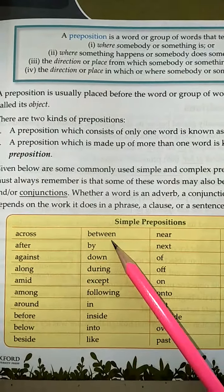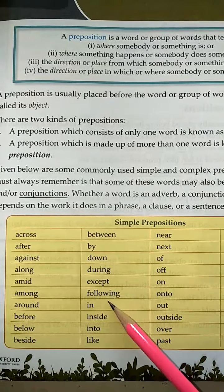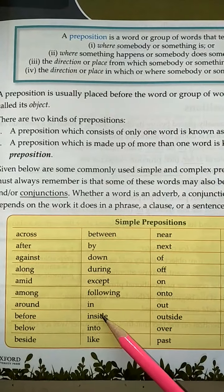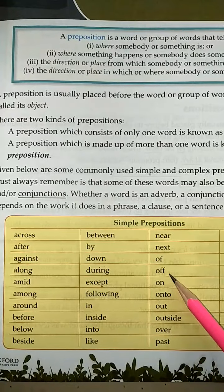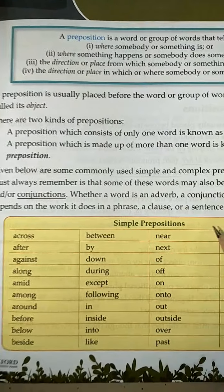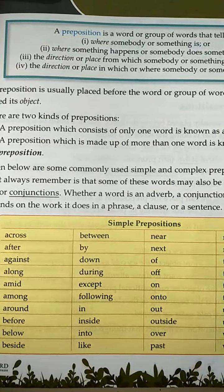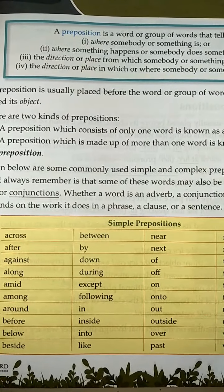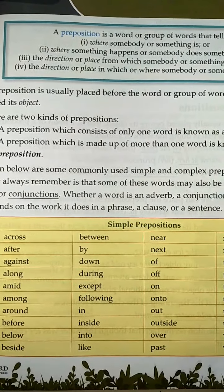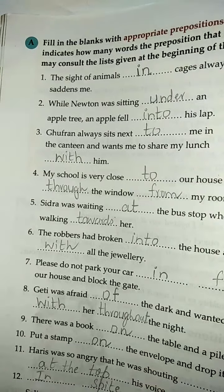In the same page, you can see the simple prepositions. It's a list: across, between, near, down, except, following, inside, into, like, out, on, of — aur inn ka matlab: aan, jaan, andar, bahar. These are all called prepositions.